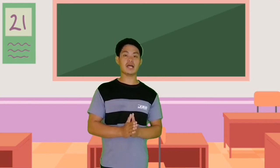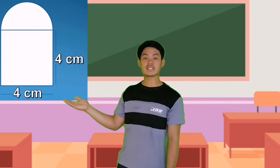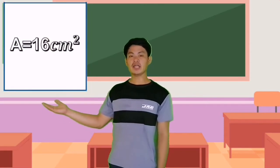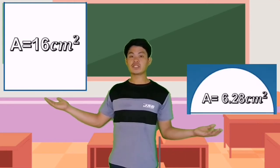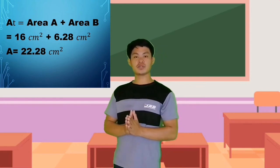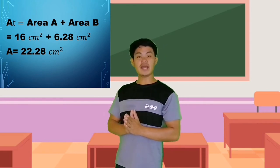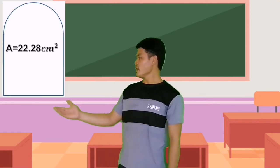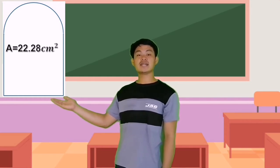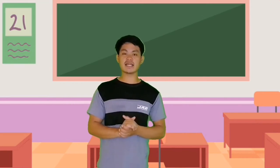Now, to find the area of this composite figure, we just add the areas of the two shapes. Shape A is 16 cm squared, plus shape B which is 6.28 cm squared. 16 plus 6.28 equals 22.28 cm squared. Therefore, the area of this composite figure is 22.28 cm squared.